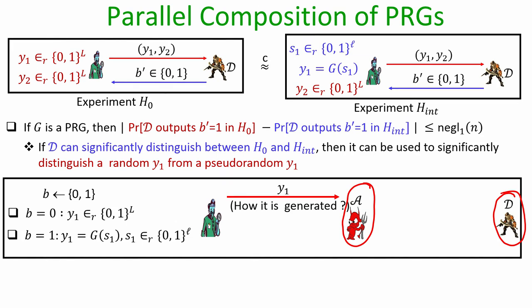As per the indistinguishability experiment, the verifier tosses a coin: if 0, Y1 is truly random; if 1, Y1 is generated by running G on a uniformly random input. Algorithm A itself generates a uniformly random string Y2 of size big L bits, then produces a new challenge for distinguisher D by concatenating Y1 with Y2.